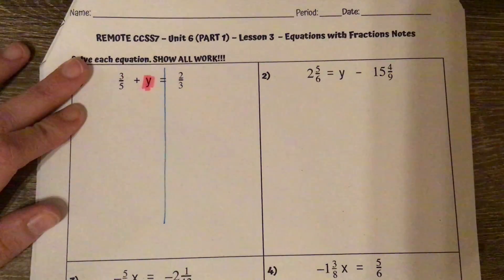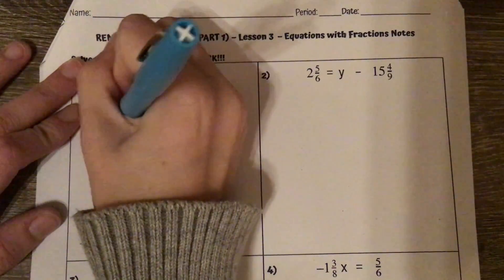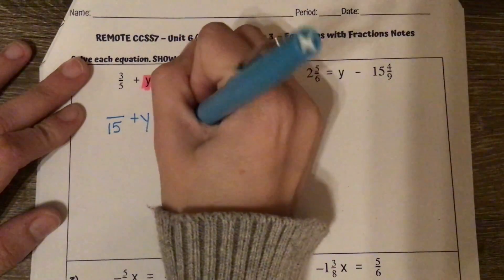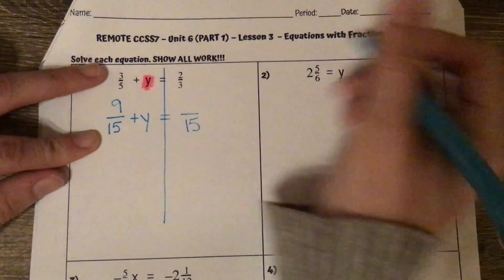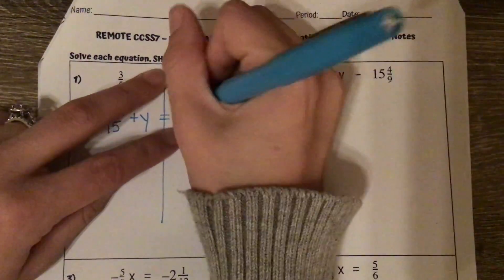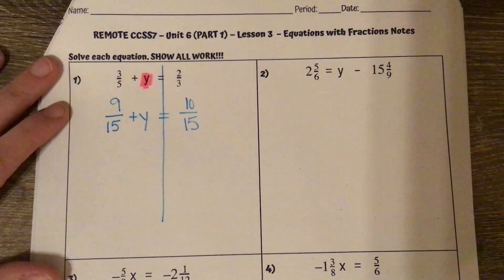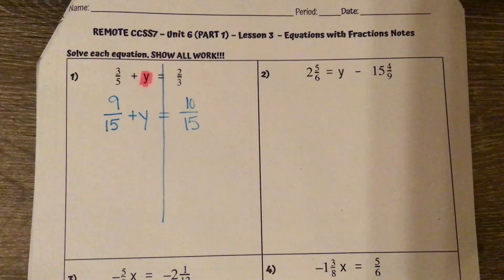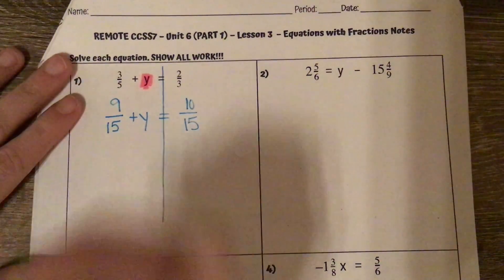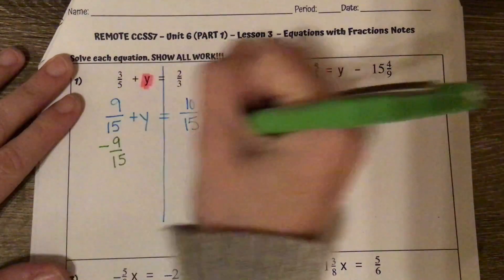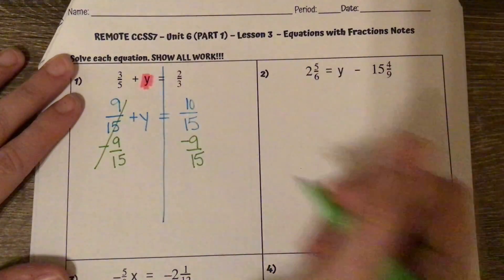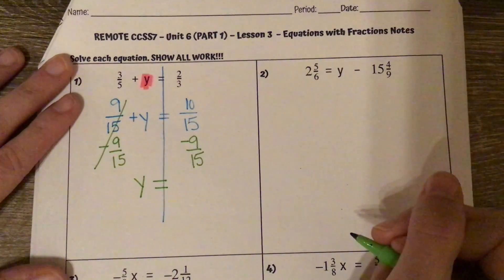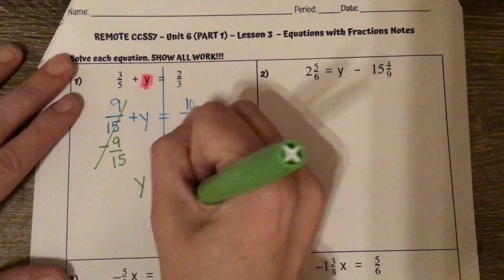5 and 3 — their least common multiple is 15. So I'm going to rewrite my fractions with a denominator of 15. 5 times 3 is 15, 3 times 3 is 9, 3 times 5 is 15, 2 times 5 is 10. Now I'm going to go through the solving process. I've got positive 9 fifteenths, so I'm subtracting 9 fifteenths from both sides. It cancels out on the side with the variable, leaving y alone. 10 fifteenths minus 9 fifteenths is 1 fifteenth.